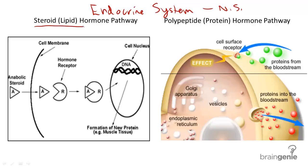There are two major types of hormones, though there are other types as well. The two major types we're going to discuss in this video are steroid hormones and polypeptide or protein hormones.